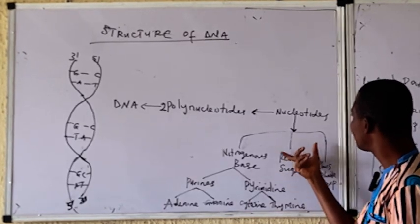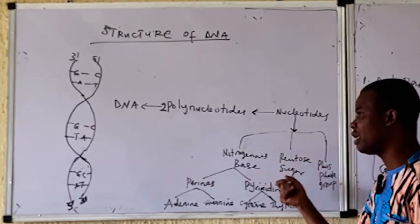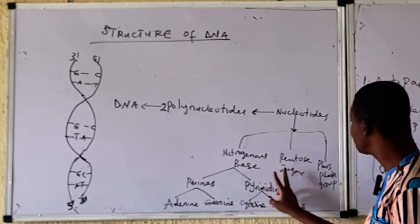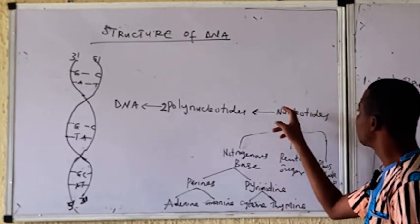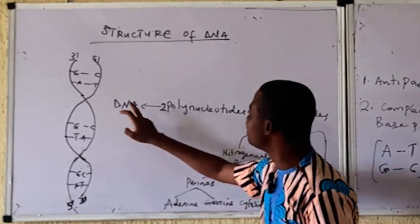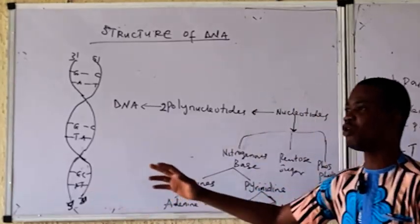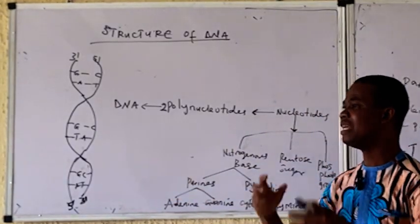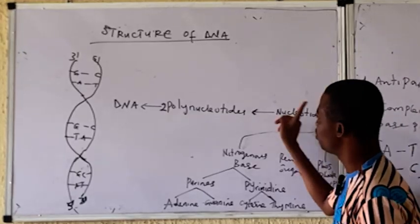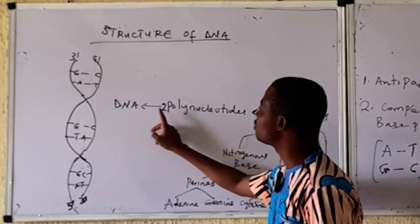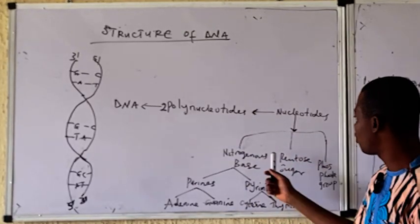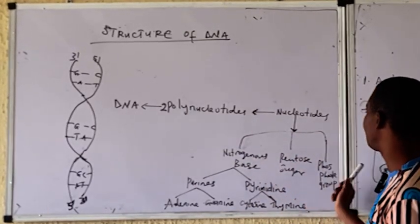When these three components are joined together through a chemical process, they form nucleotides. From nucleotides, we have polynucleotides. And from polynucleotides, we have DNA. So to produce DNA, we need these three things that will form nucleotides, from nucleotides to polynucleotides, and from polynucleotides to DNA.